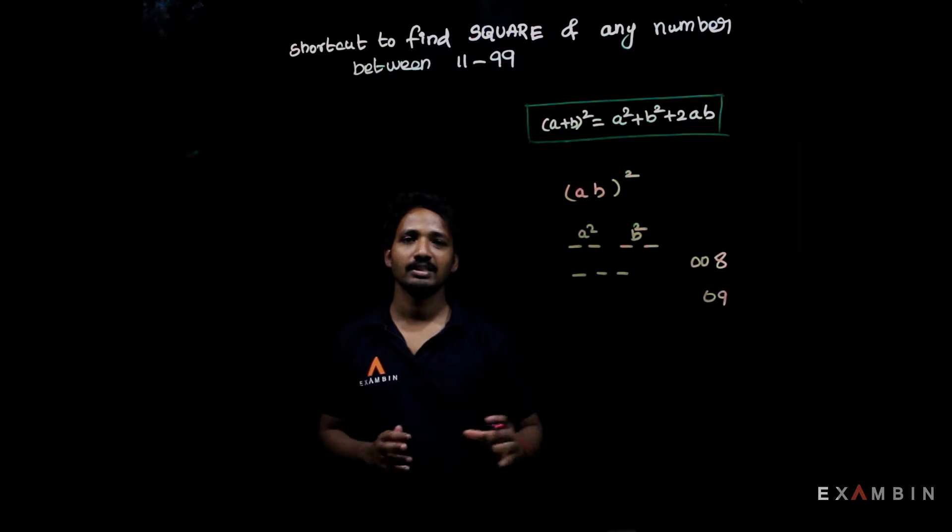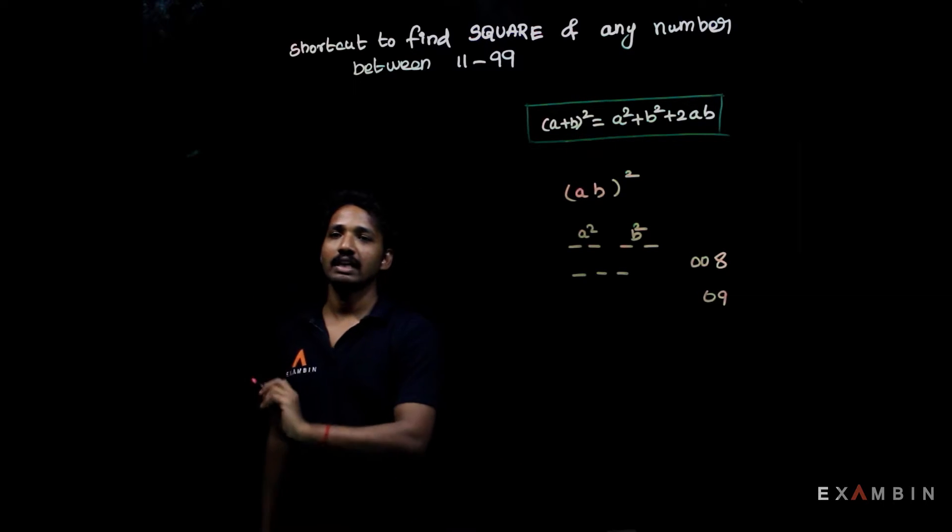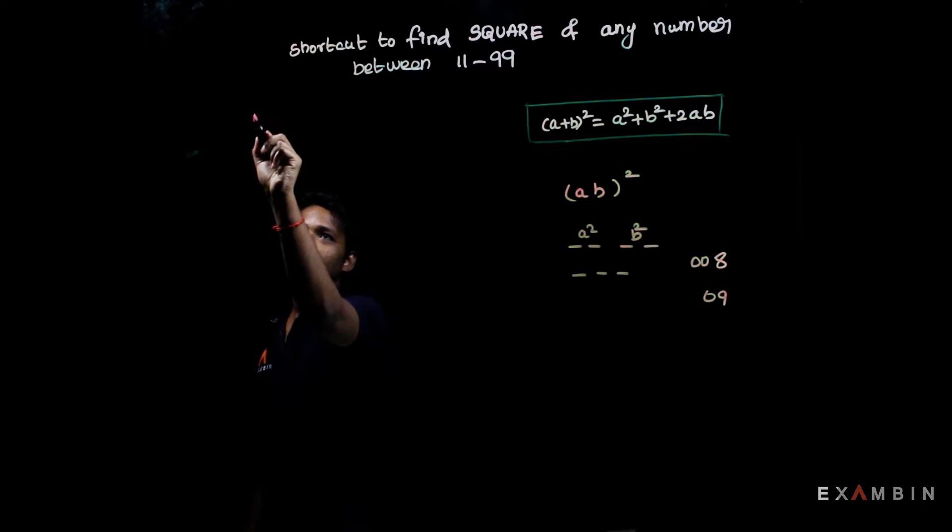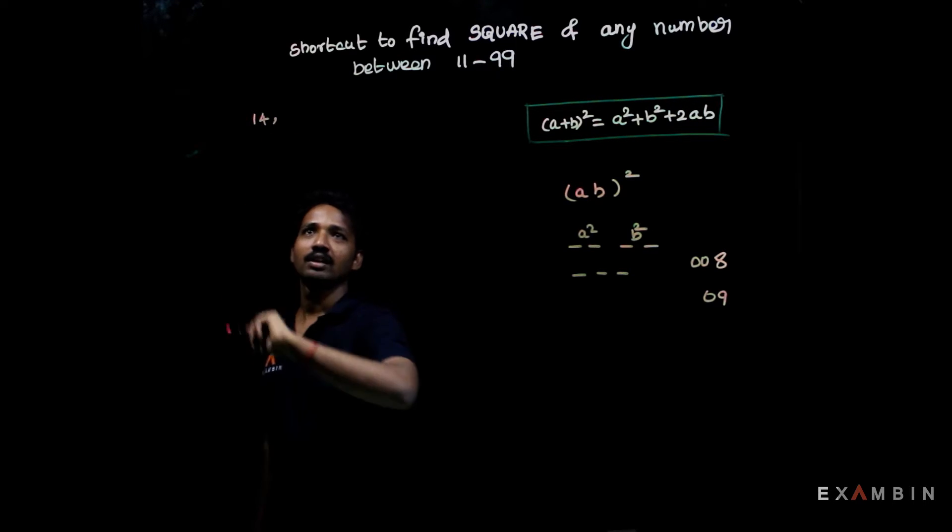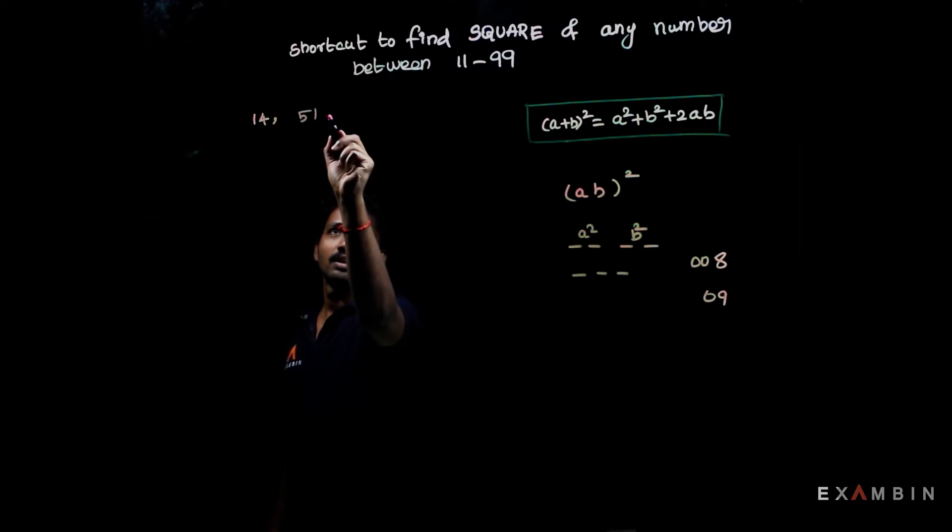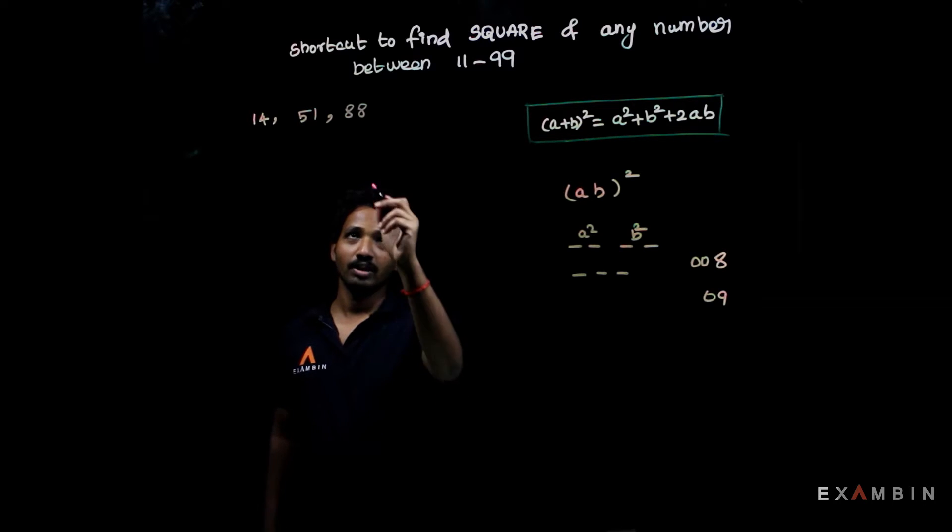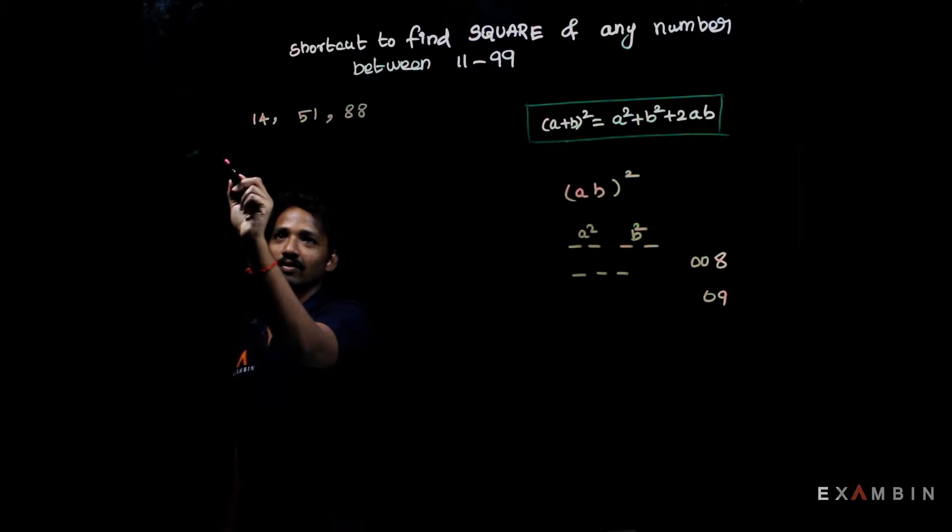We will see some examples to understand this better. We will take three numbers like 14, 51, and 88. We will calculate square value for these numbers. First we will take 14.